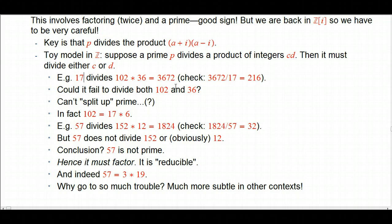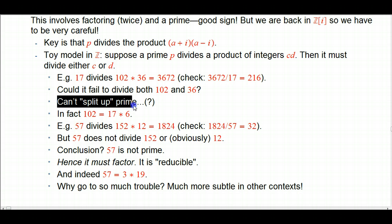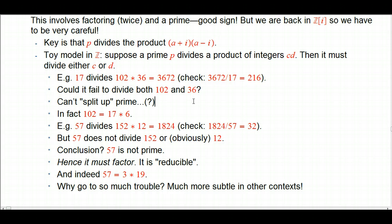Let's look at 17. It's a true fact that 17 divides 102 times 36, which is 3,672. If you check it on the calculator, yes, it divides with no remainder. Could it fail to divide both 102 and 136? Your intuition should say no — it's got to divide one or the other. The intuition is that I can't split up the prime, so it can't partly divide 102 and partly divide 36. It all has to go into one or the other. And indeed, 102 is the one that's divisible by 17.